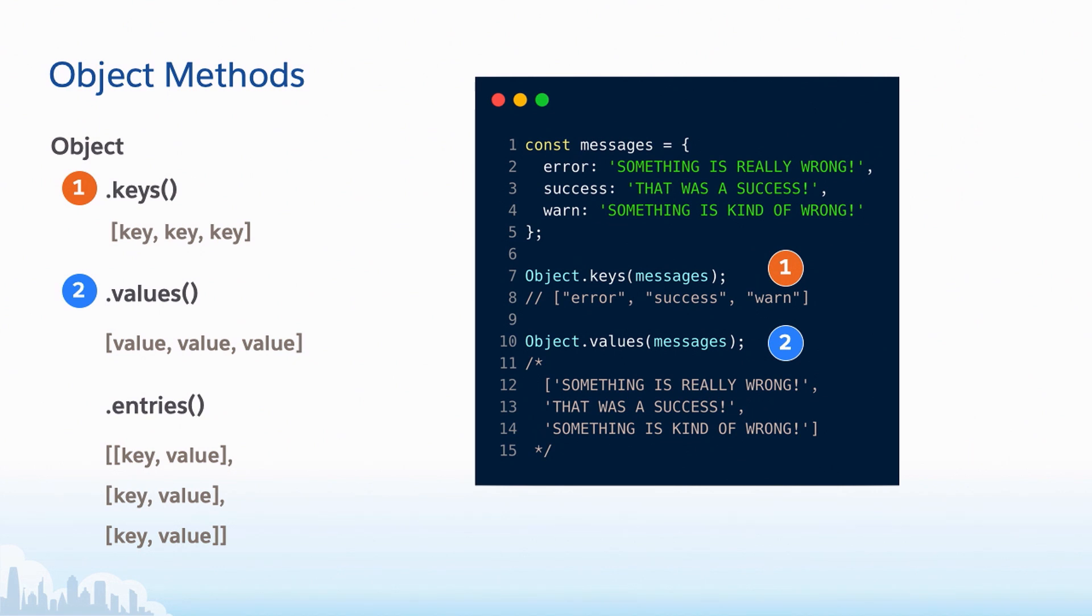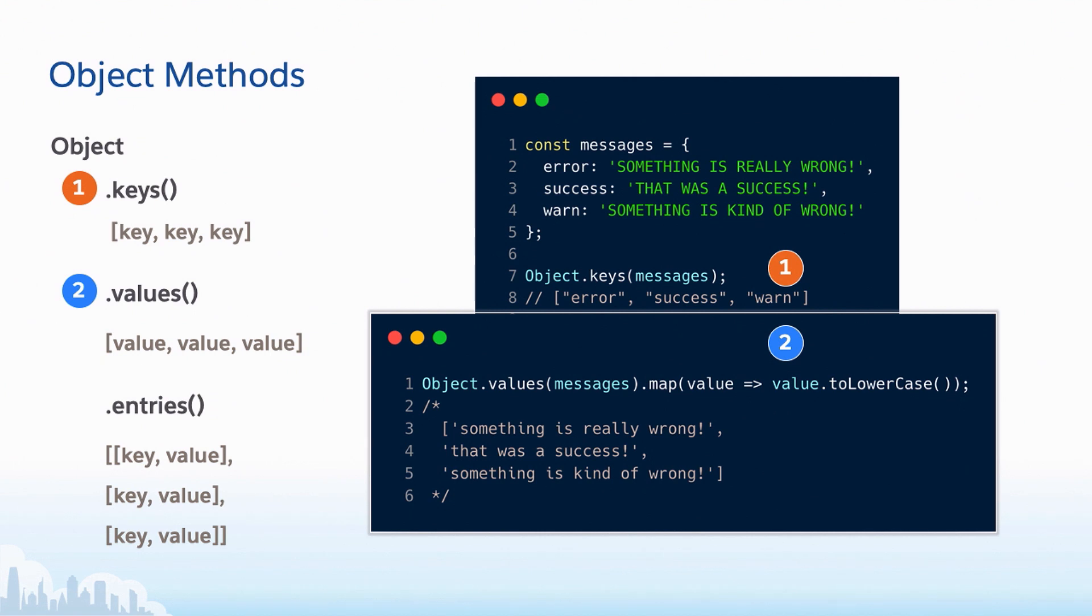So let's take a look. We have a messages object, and we have error, success, and warn inside of that. Now, if we, on line 7, call object.keys on messages, we get an array of all of our keys, right? We have error, success, and warn. On line 10, if we call object.values of messages, we get an array of all of our values, all of our phrases that are in there. Now, let's say that our PM came to us with a task to make these messages lowercase because we're yelling at our users and nobody likes to do that. It's not good for our brand. So we're going to go in and tone these messages down. And to do that, we're going to do object.values with messages. Again, right? That's what we just did. And then we can use map to iterate over each of those values and just do a small transform to lowercase them. And as a result, we get our array with our phrases toned down.